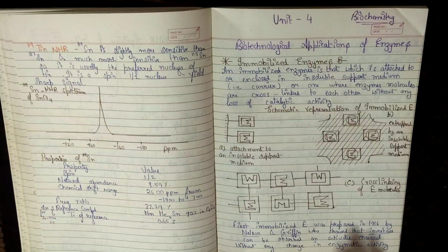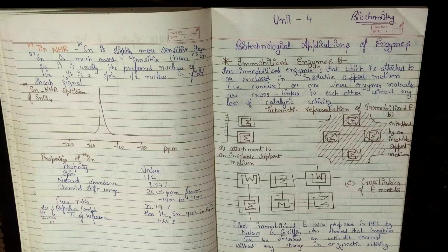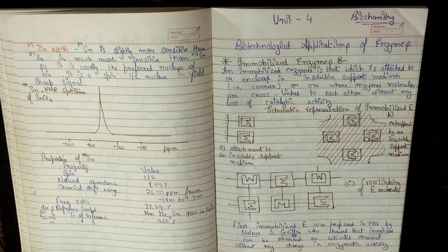Third condition होती है? Enzyme, जब एक दूसरे के साथ cross-linking शो करें, तो उसको भी हम immobilized enzyme कहते हैं.